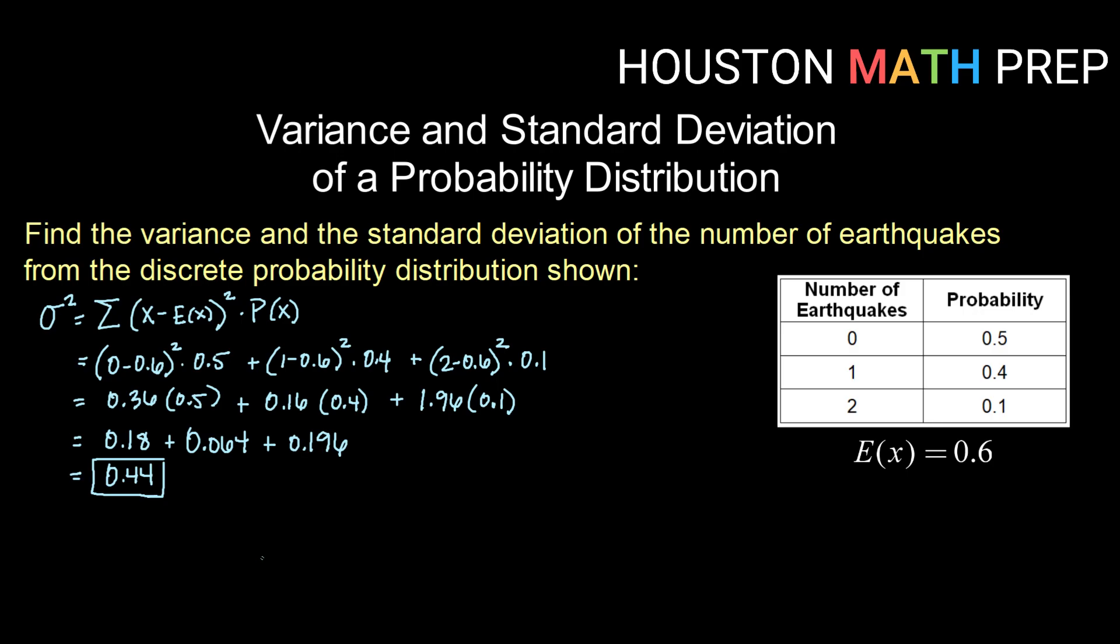Now remember that variance isn't very easy to work with. It's not easy to explain what that means, so we typically prefer to work with the standard deviation. So the standard deviation will be the square root of the variance, or in this case the square root of 0.44. That comes out to be 0.663.